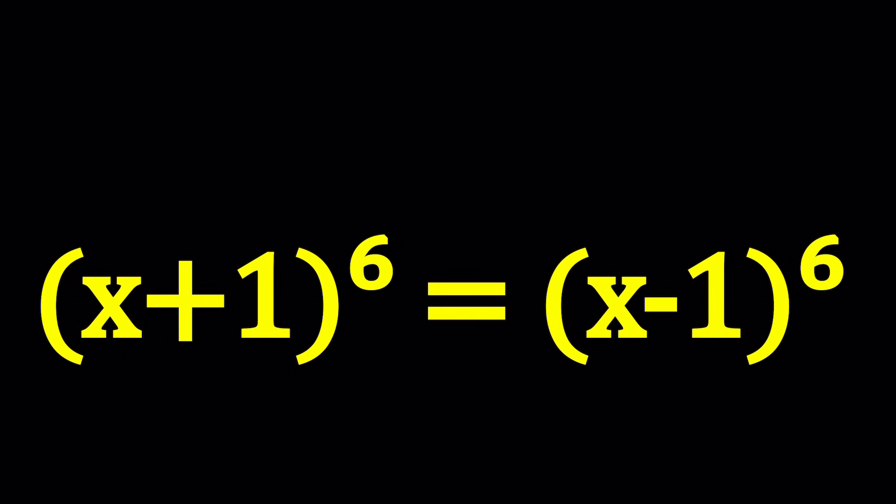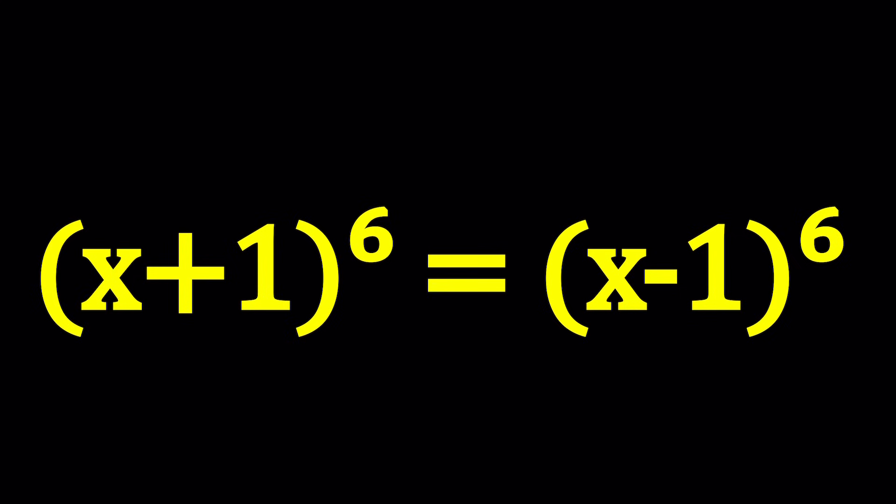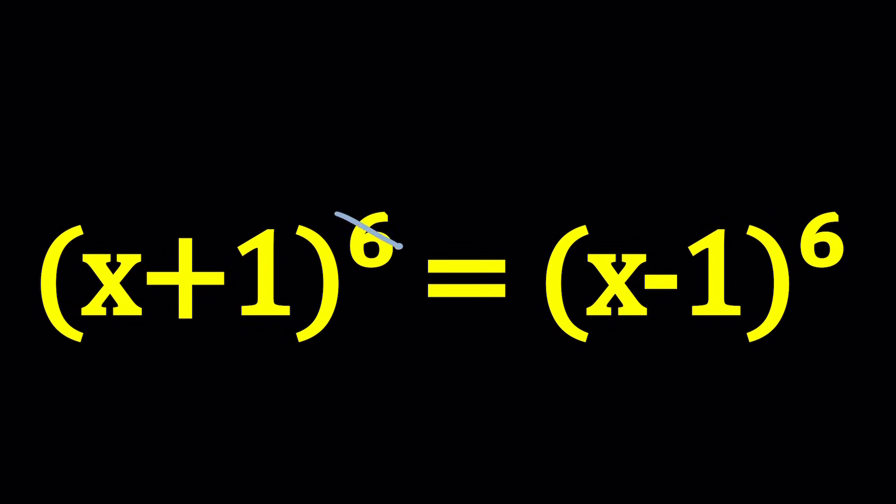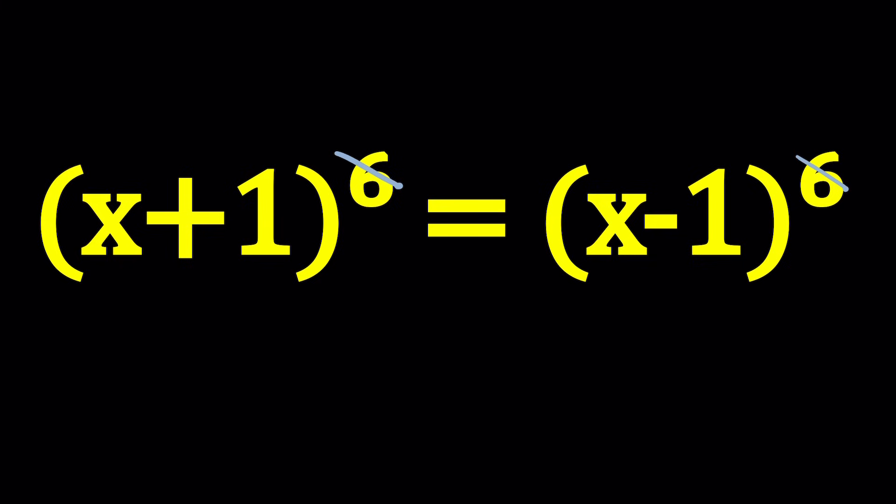Now, since we have the same power on both sides, you're probably thinking what I'm thinking. Why don't we just eliminate the powers, whatever that operation is, right? Just rooting. So this gives us something beautiful: x+1 = x-1.